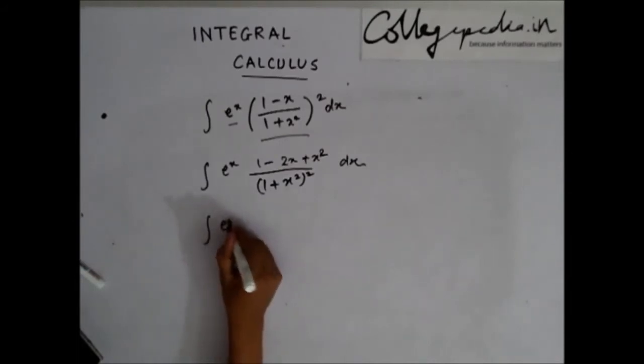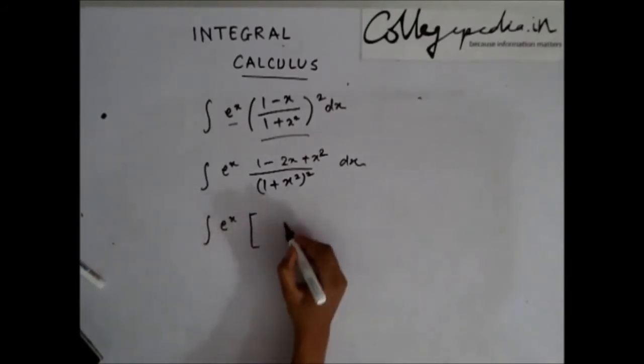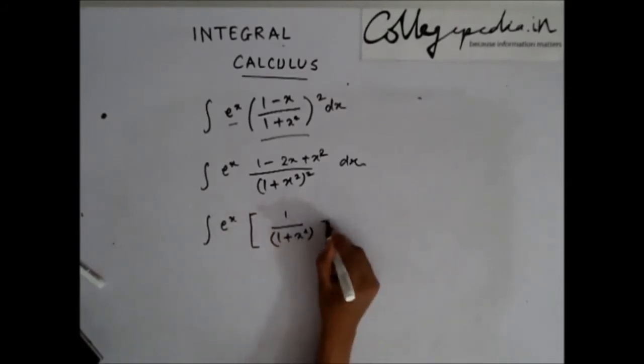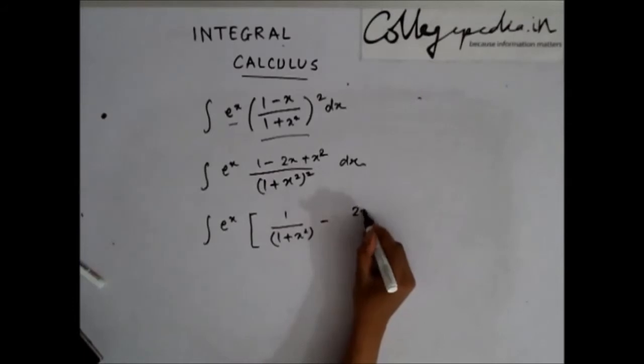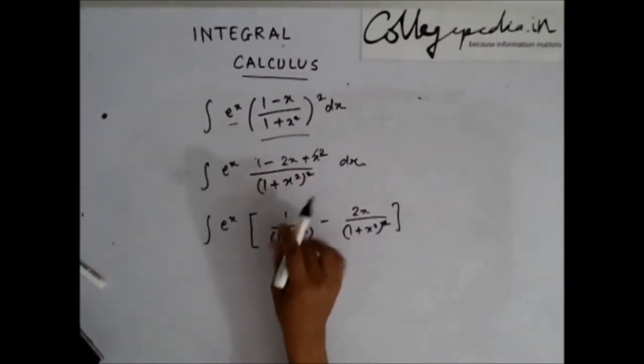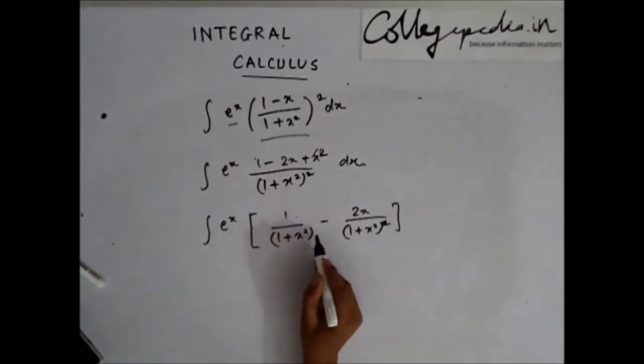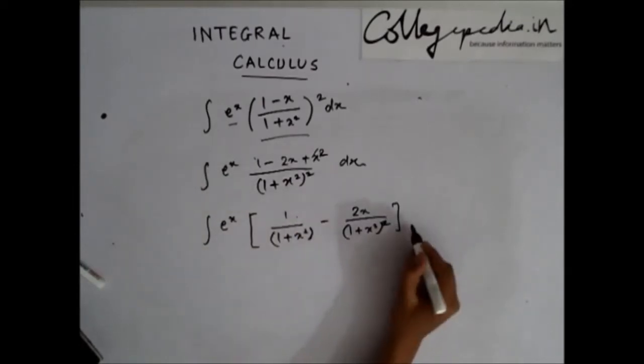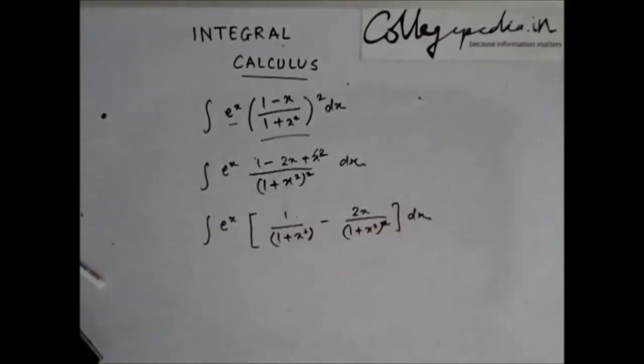Now, I can write this as 1/(1 + x²) minus 2x/(1 + x²)². I have grouped 1 + x². Actually, it was (1 + x²)/(1 + x²)², so it got cancelled and I'm left with this. And here, I have this.